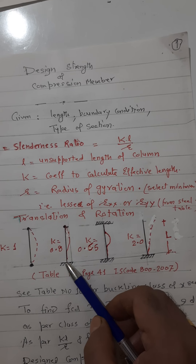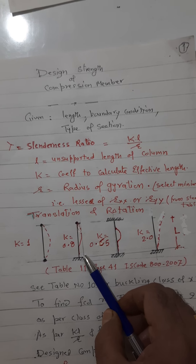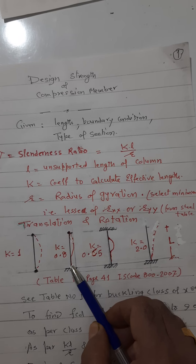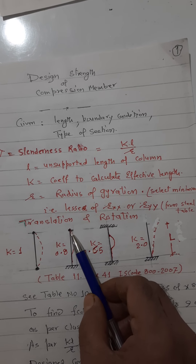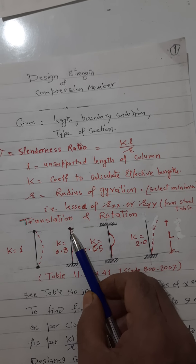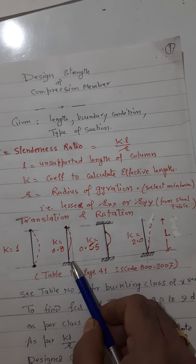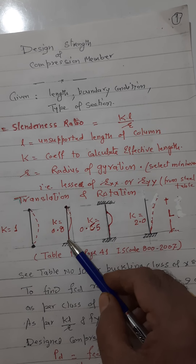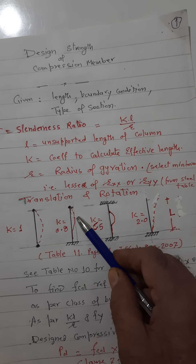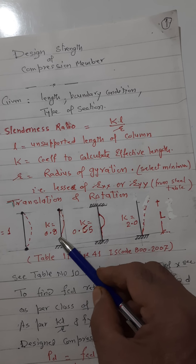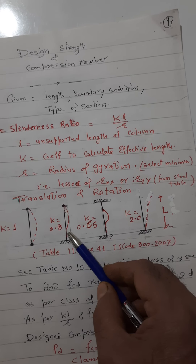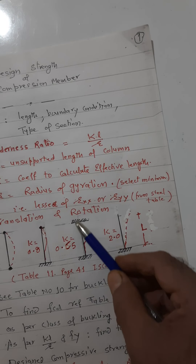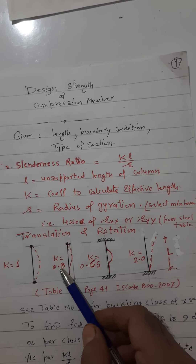For the second condition, when one end is fixed — restrained in both translation and rotation — and the other end is restrained only in translation but not in rotation, the column deflects such that the effective buckled length is 80% of the total length. So the value of k is taken as 0.8.